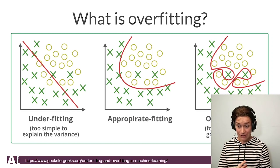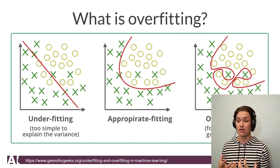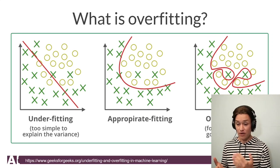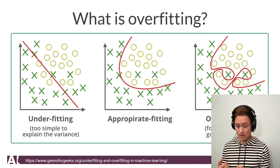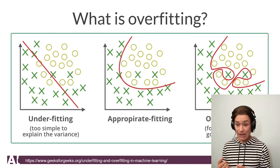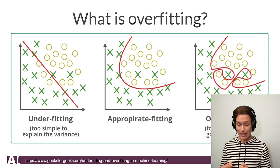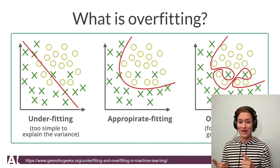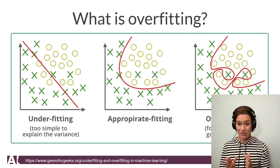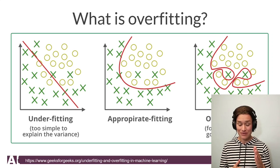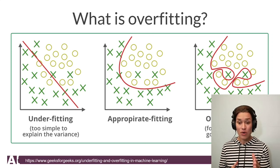Appropriate fitting means that it is distinguishing the class we want to find — the cartilage — from the rest more or less okay. We only have two crosses mixed with the circles. The crucial thing here is 'more or less okay.' We are not striving for 100%, because when we do, we go to overfitting.